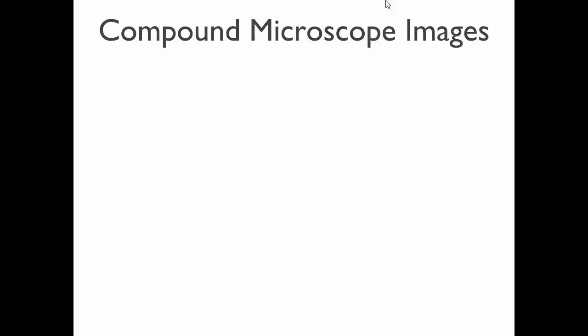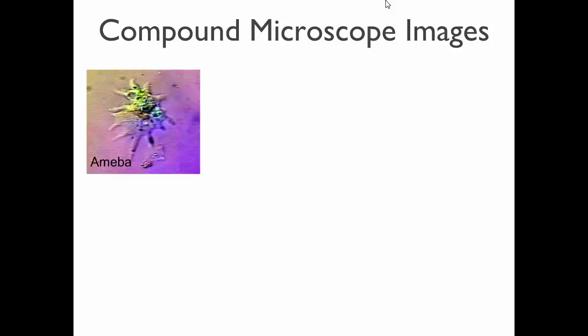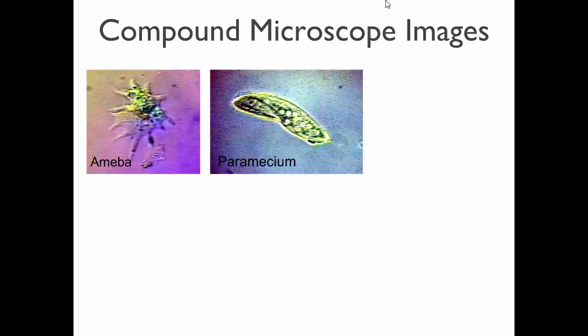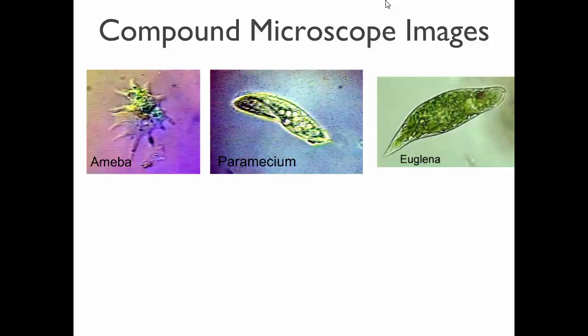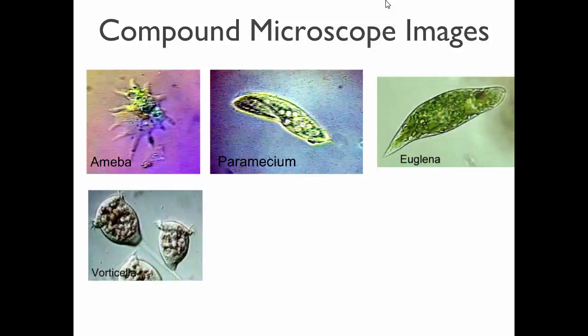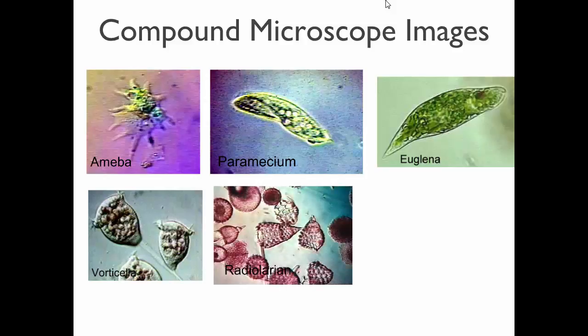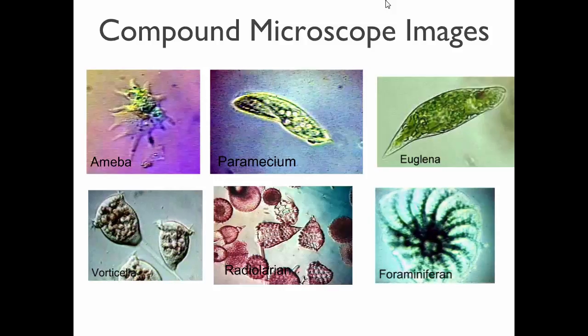We're going to look at some images, some photographs taken through the eyepiece of a few types of microscopes. Through the compound microscope we can see single-celled living organisms. This is an amoeba. We will be looking at amoeba in a few weeks under the microscope. We will also look at paramecium and euglena, two other single-celled organisms that you might find in pond water. These are some others: vorticella, radiolarians, foraminiferans. These are all things seen under the compound microscope, but if you notice, everything looks pretty flat when you see it in a compound microscope.